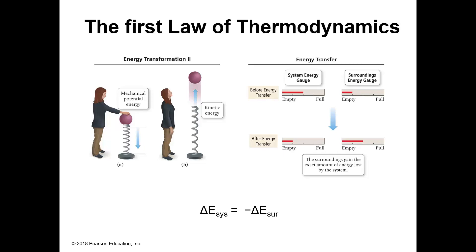Let's take a closer look at system and surroundings. Let's call this spring the system. Everything surrounding the spring — the person, the room — would be the surroundings. You can transfer energy to the surroundings. Here the spring is released, transferring energy to the ball. The ball starts to move, so that's kinetic energy.